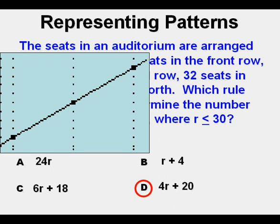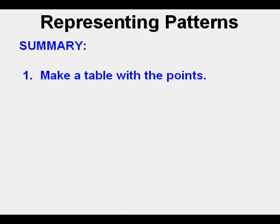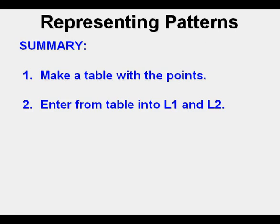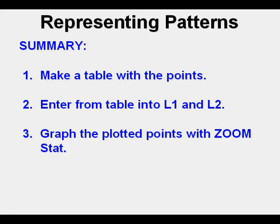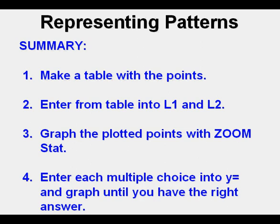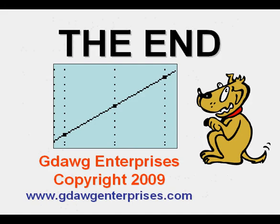Let's summarize. We need to first make a table with the points. Second, enter from the table into L1 and L2. Independent quantities go under L1, dependent quantities go under L2. We need to graph the plotted points with zoom stat or zoom 9. Then we can enter each multiple choice into y equals and graph each choice until we have the right answer. I hope this video has been helpful. I hope you come back and check some of our other videos. Thanks for coming.